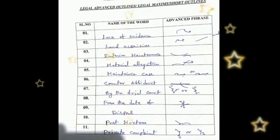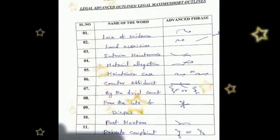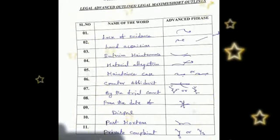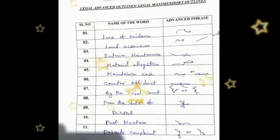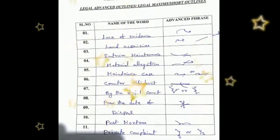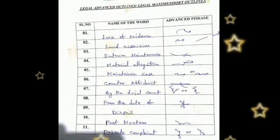The next word is 'counter affidavit.' The outline of the word is K double and N hook, and intersect F for affidavit.